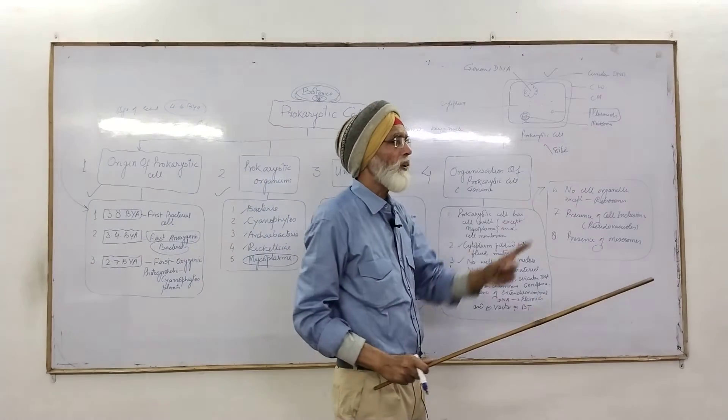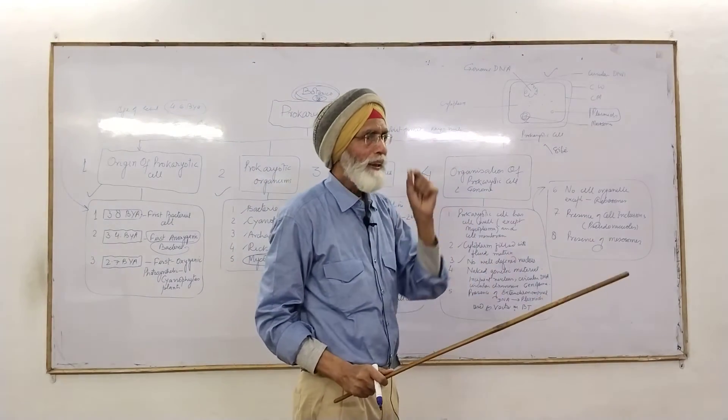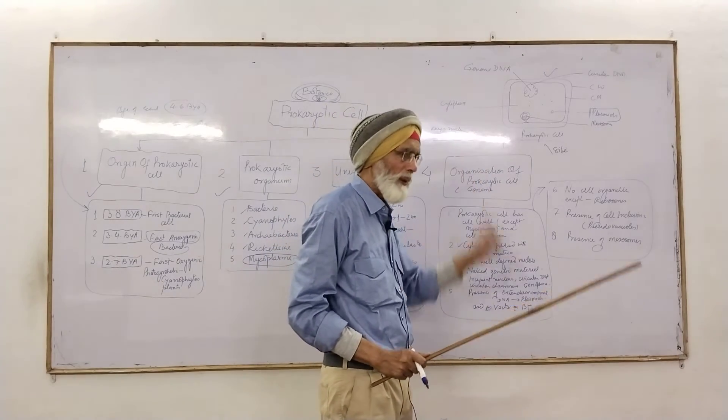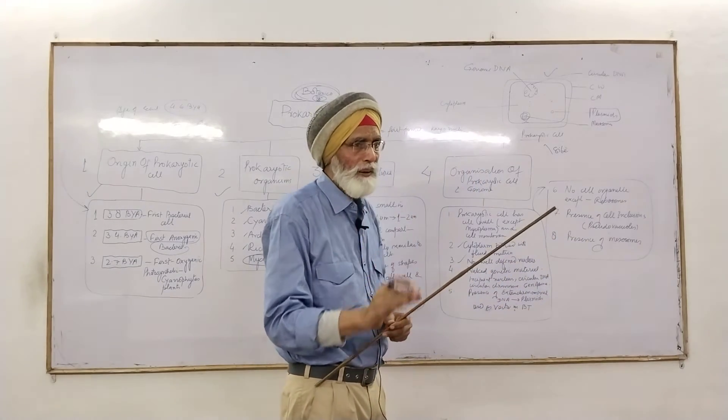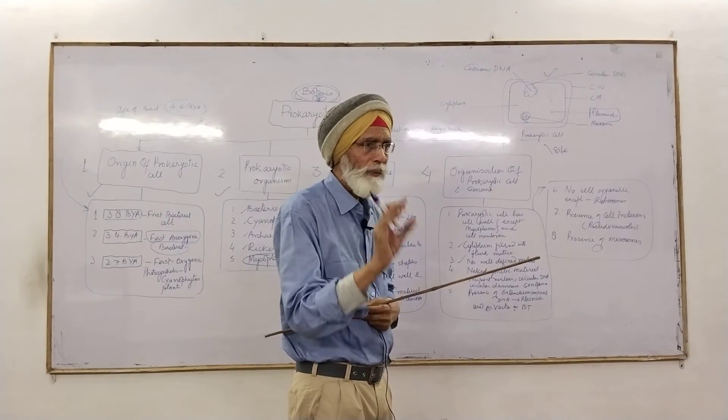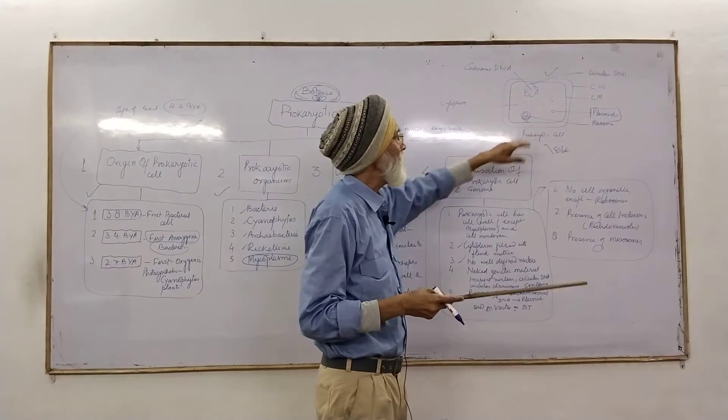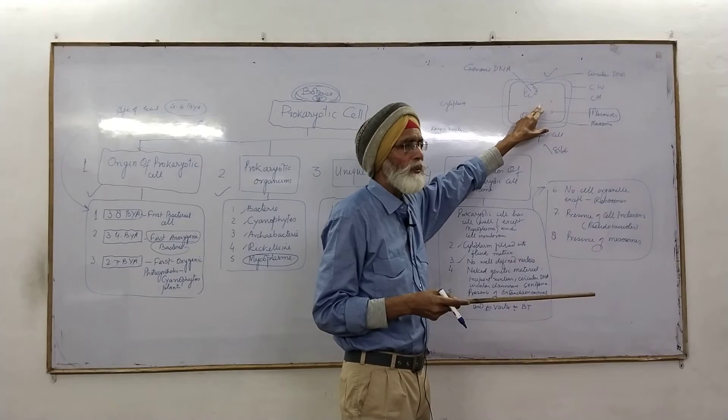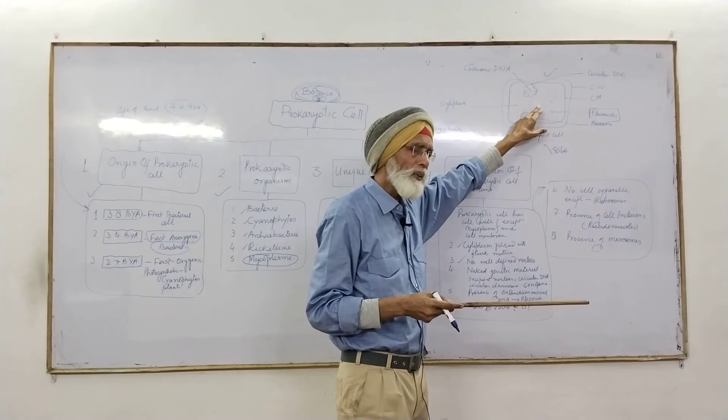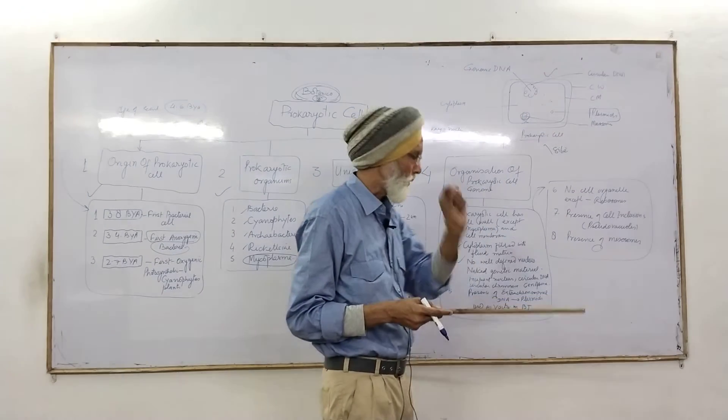Always remember, genome circular DNA is only one in number and usually attached to cell membrane. But while in case of the plasmid, they are very, very small circular self-replicating DNA molecule. They are all over the present, either four or five in number. They are also having a double helical DNA molecule.